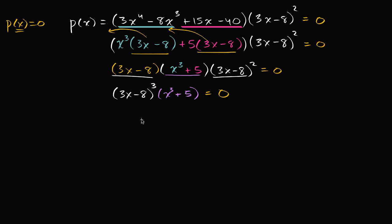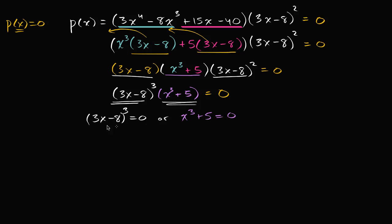In order to get this equal to zero, either three x minus eight to the third equals zero, or x to the third plus five equals zero. For the first case: three x minus eight to the third power equals zero means three x minus eight equals zero, so three x equals eight, and dividing both sides by three, x equals eight thirds. So that's one real zero of our polynomial.